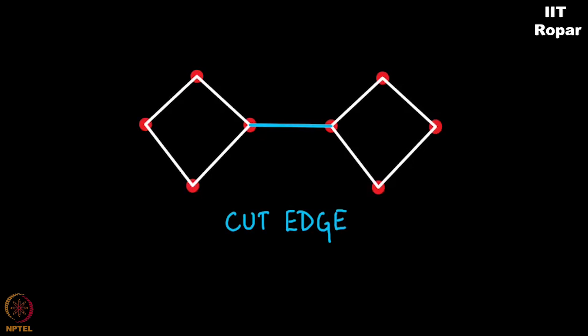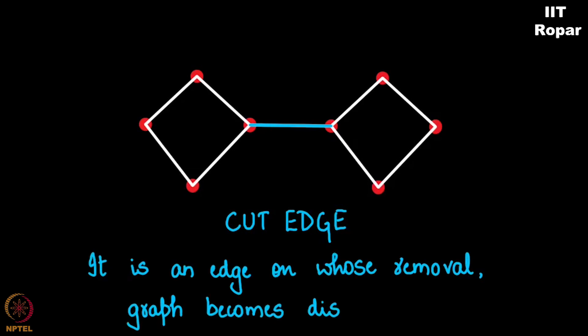To state it formally, it is an edge by whose removal the graph becomes disconnected. So if you remove an edge which makes the graph disconnected, such an edge is called a cut edge.